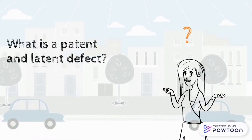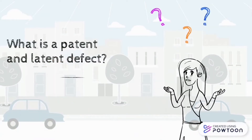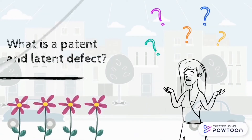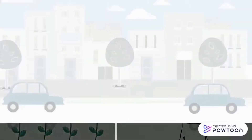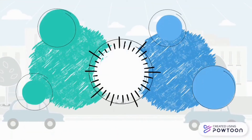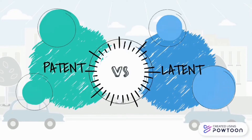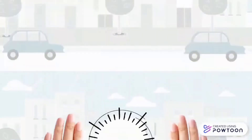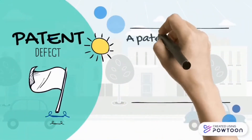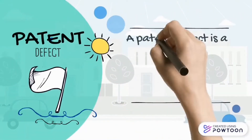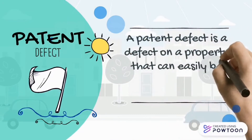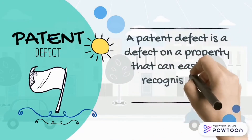What is a patent and latent defect? A patent defect is a defect on a property that can easily be recognized by reasonable inspection.